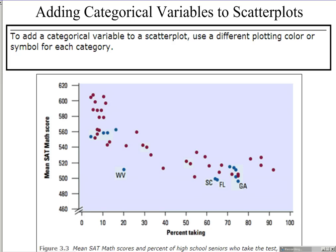To add a categorical variable to a scatter plot, use a different plotting color or symbol for each category. We'll look at this on the graphing calculator. For example, a scatter plot of mean SAT scores and the percent of high school seniors who took the test shows southern states highlighted in a different color — blue for southern states, another color for the remaining states.